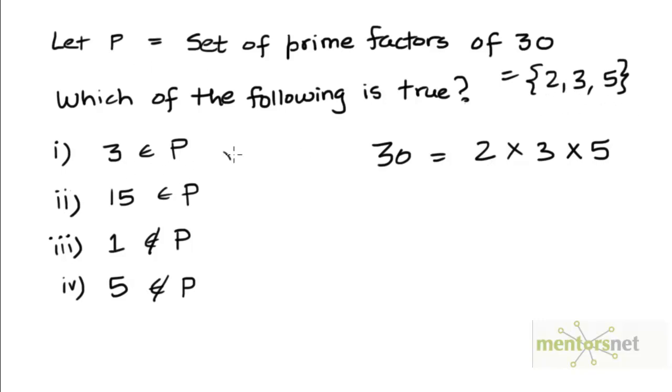So clearly the first choice is true. 3 does belong to the set P. But 15 is not a prime number. So even though 15 is a factor of 30, because 30 divided by 15 is 2, 15 is not a prime factor of 30. So this is not true.